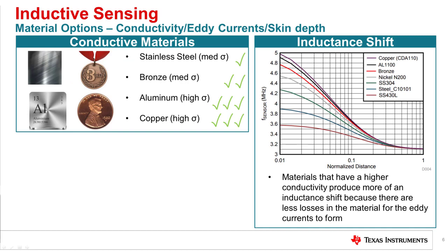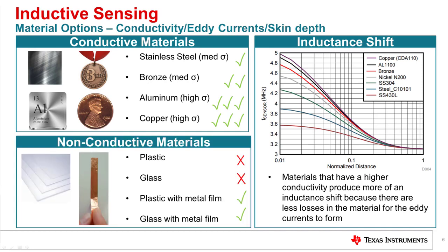Stainless steel, bronze, aluminum, and copper can all be examples for your LDC sensor. However, copper and aluminum perform the best since highly conductive materials produce a larger inductance shift. For non-conductive materials like plastic and glass, metal film or copper tape can be added to the surface to allow the LDC to sense it.